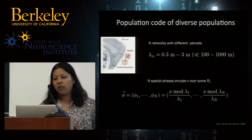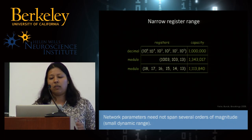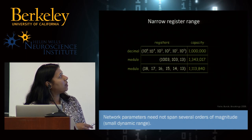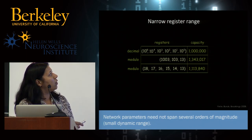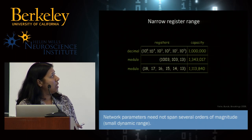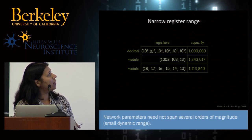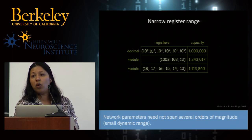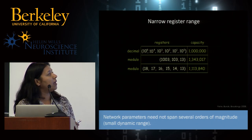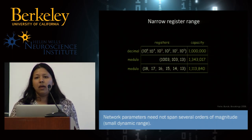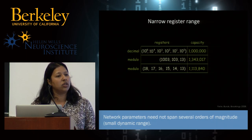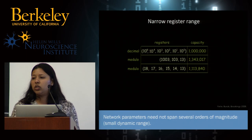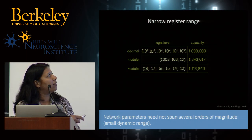Residue number systems have some very interesting properties. We're used to fixed base number systems where five or six decimal registers can represent a number as big as 10^6. In a modulo system, you can also represent a number as big as a million using just three different moduli — or six moduli where the moduli are all about the same size, unlike the decimal system where they span many orders of magnitude. From a biological point of view, this is very interesting because it's very tough to construct things that span many orders of magnitude in dynamic range.